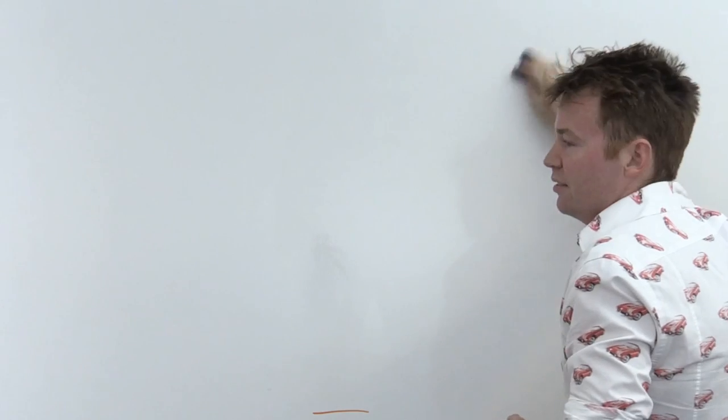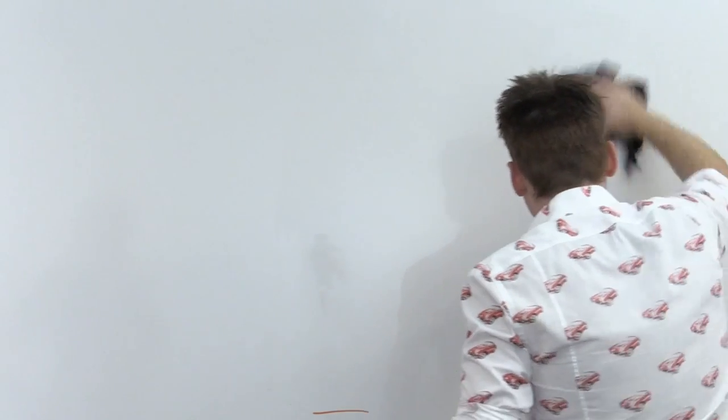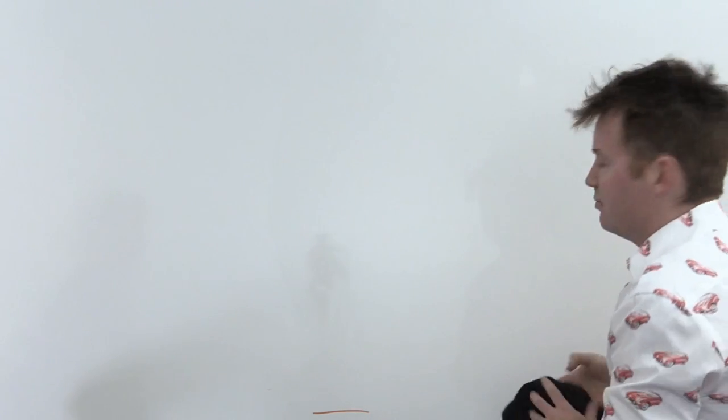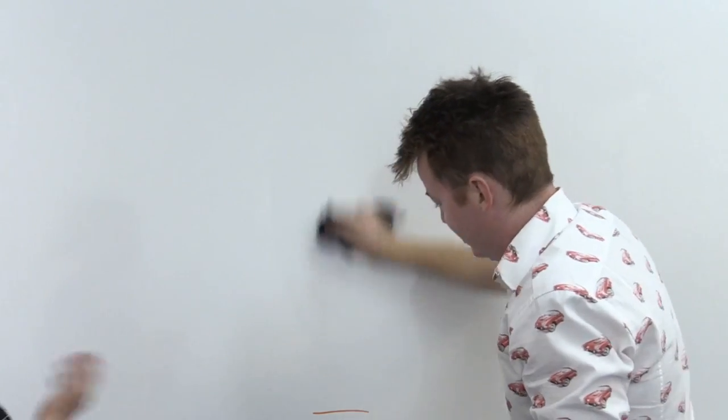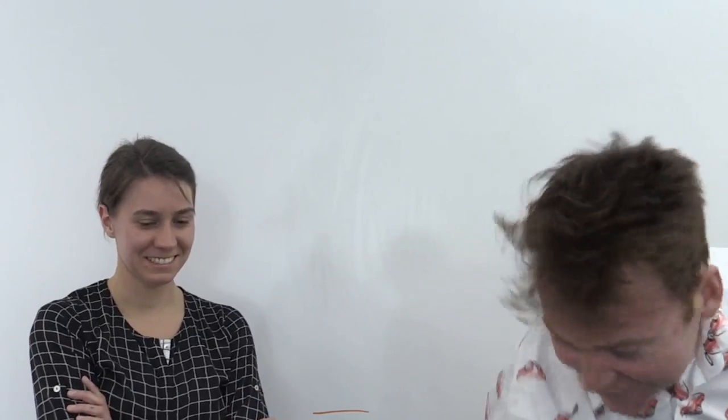Should you state De Moivre's theorem when using it? I'd like to see that the student knows what they're doing. For a two-mark question you probably wouldn't require citing the theorem, but for a five-mark question you'd want to establish criteria. My feeling is if you see De Moivre's theorem, say 'De Moivre's theorem' — it's never a bad idea to say what you're doing.